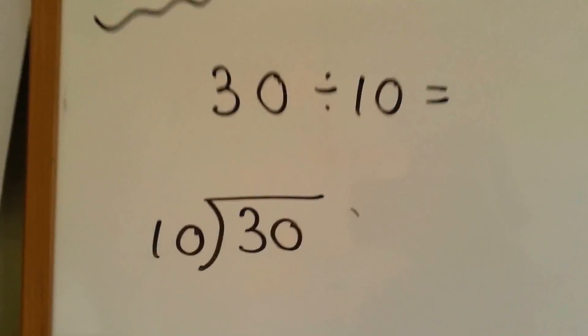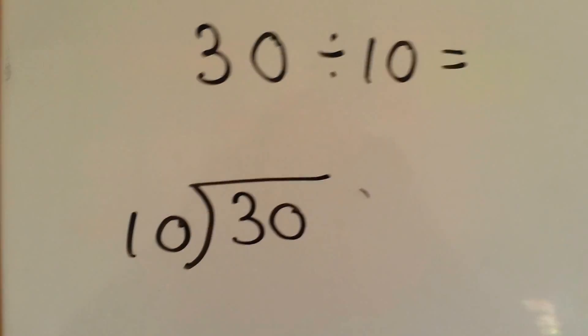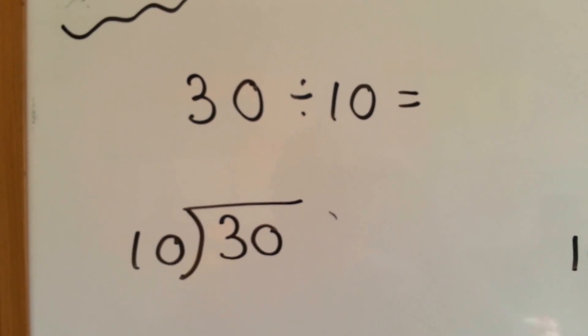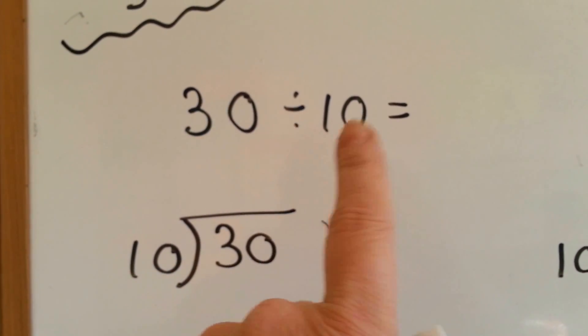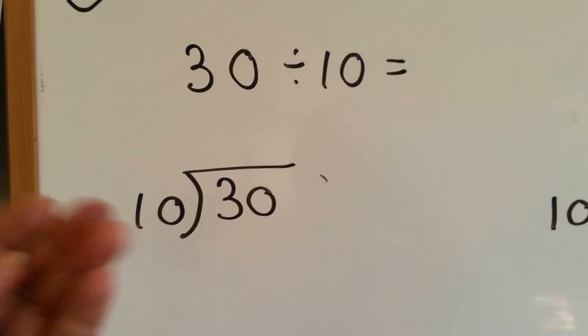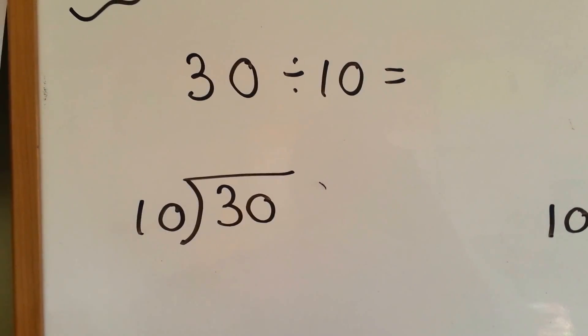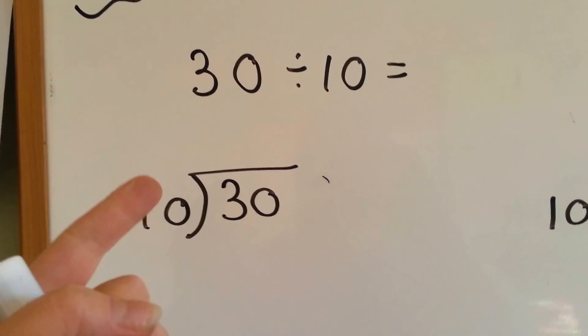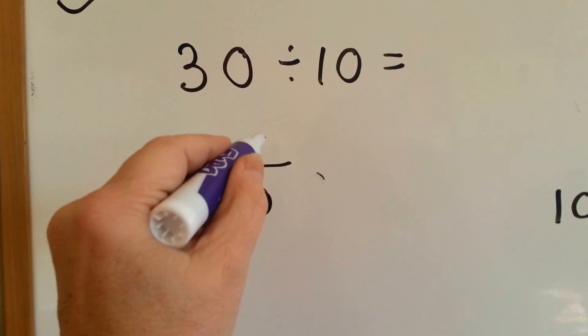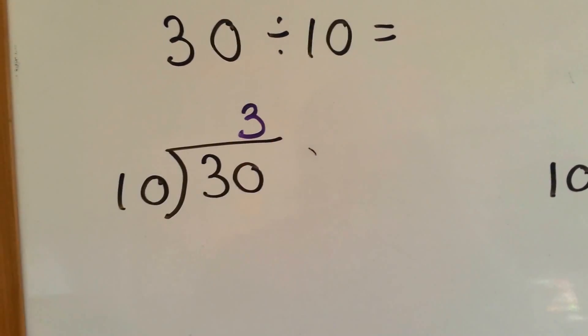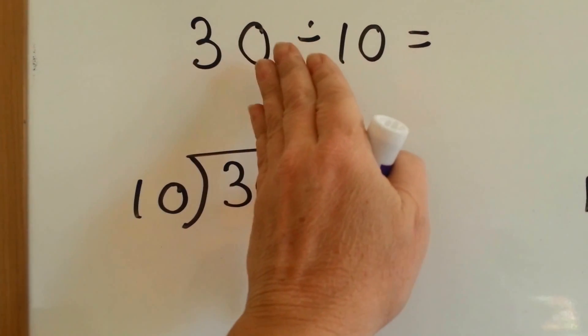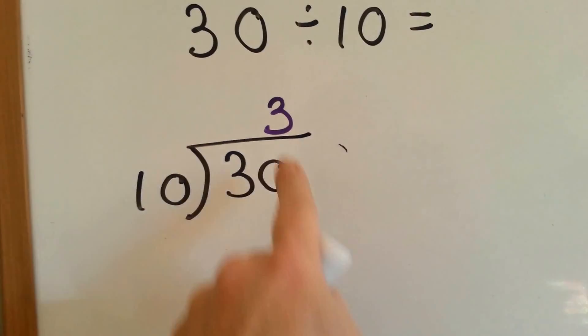So let's look at the first one. 10 goes into 30 how many times? 30 divided by 10. You can count by tens, and whatever number of fingers are left, that's how many times it fits. Let's count by tens. 10, 20, 30, 3. 10 goes into 30 3 times. The reason I put it above this 0 is because we didn't say 10 goes into 3, we said 10 goes into 30.